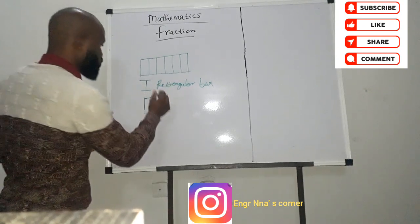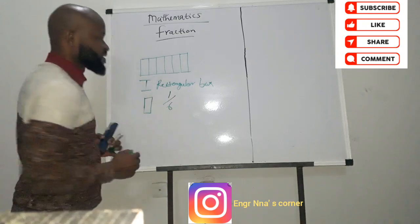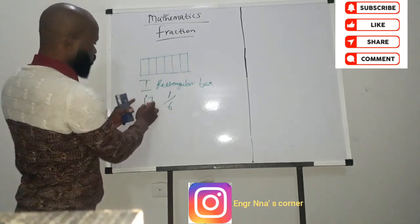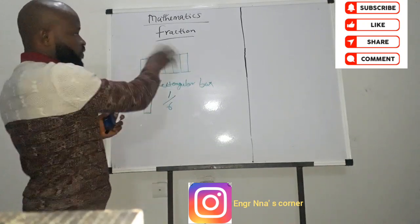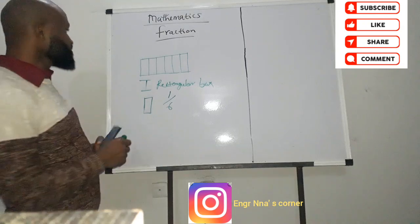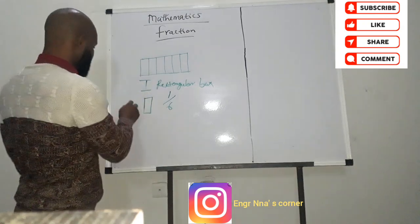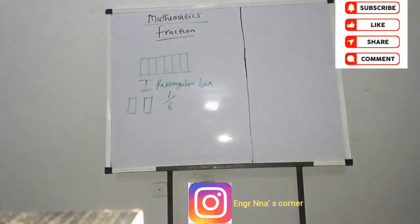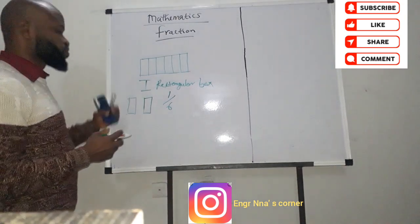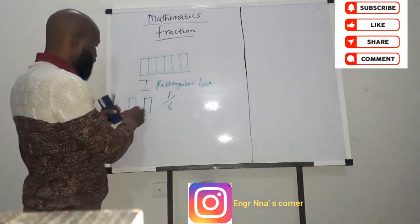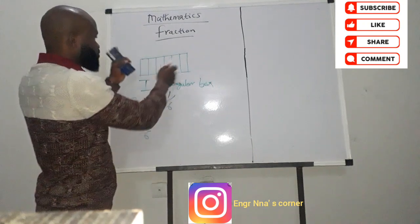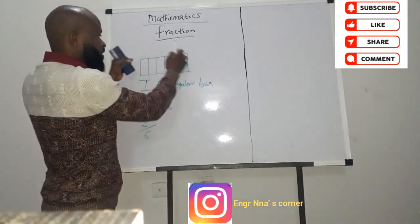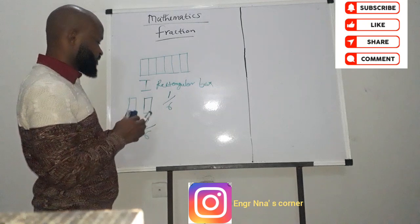That is what fraction means. It means that I took one out of six — that's one, two, three, four, five, six. I took one out of the number of rectangles in this whole. So that is what I mean by fraction. If I take two, we will have two out of six. So these are all fractions of this entire system. That's what I mean by fraction.